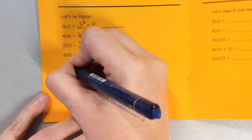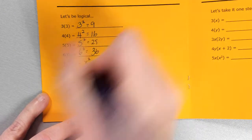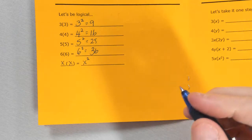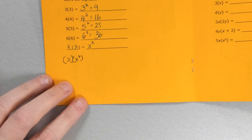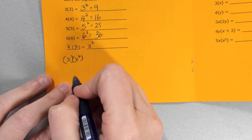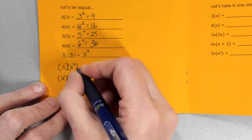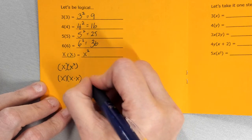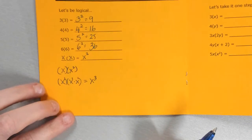What if I don't know the number and it's x? Well, if 6 times 6 is 6 squared and 5 times 5 is 5 squared, then x times x must be x squared — because there are 2 of them. What if I had x times x squared? I could expand that as x times x times x, because x squared is x times x. How many x's do I have? Three — so that's x to the third. Since I'm multiplying them, I'm changing the exponents.